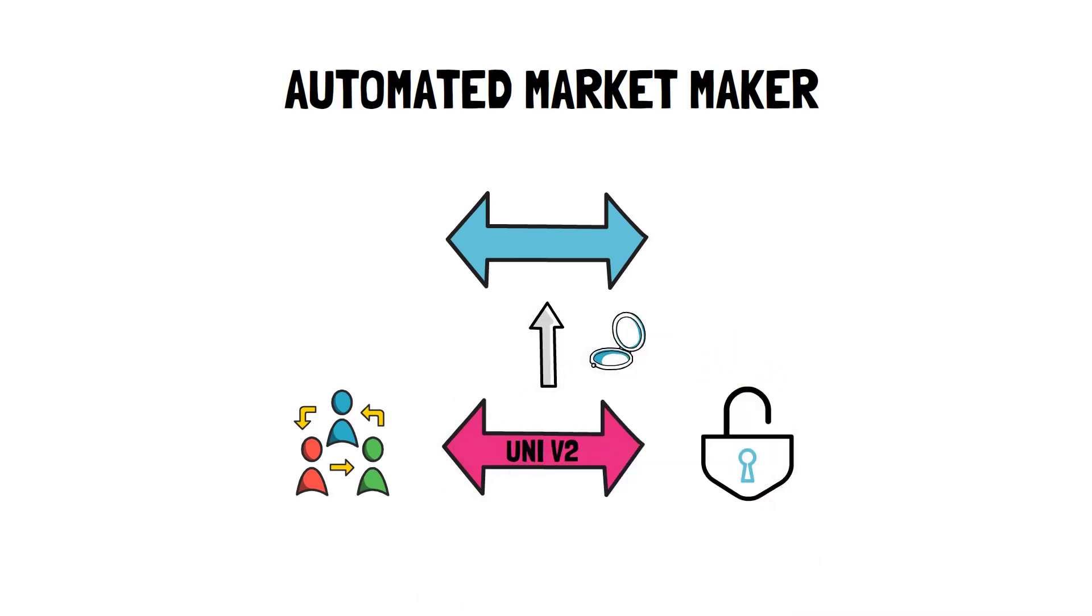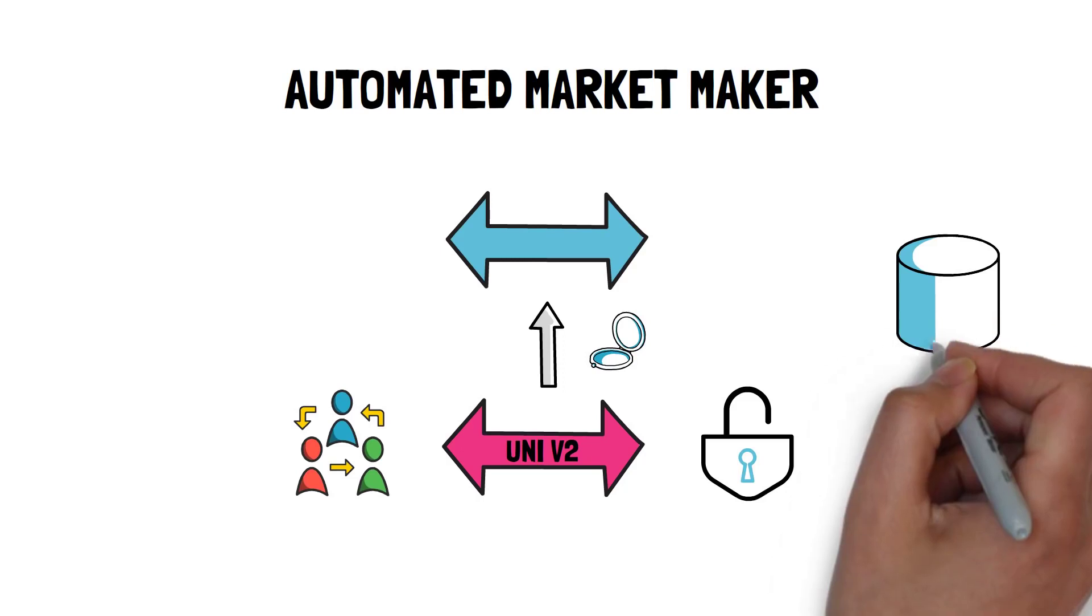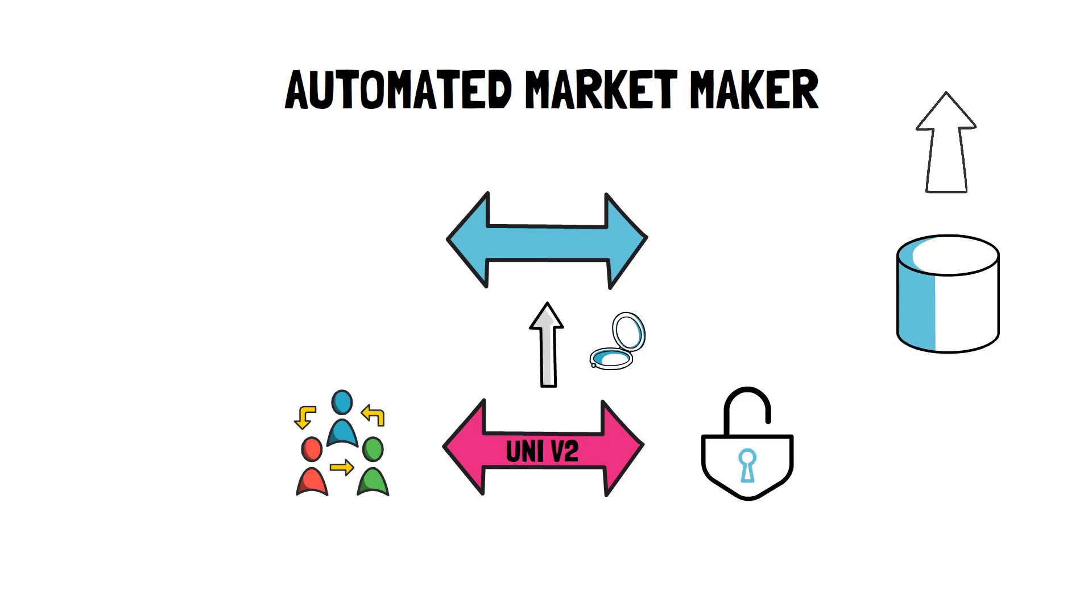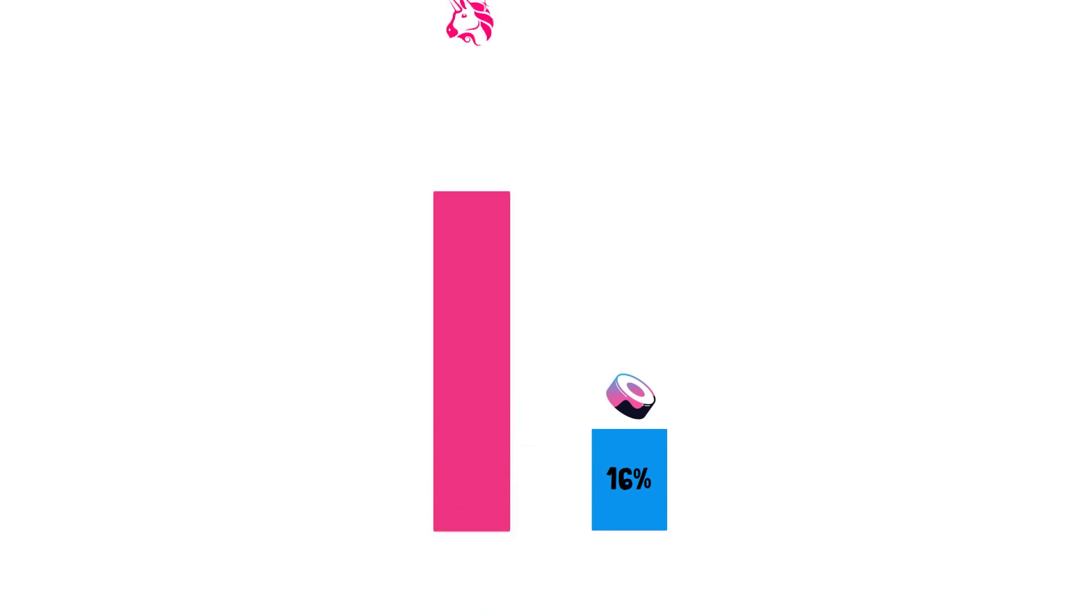If you need a recap on AMMs and liquidity pools, here's a popular video that I made some time ago. Currently, Sushi is the second largest AMM on Ethereum with around 16% of the market share. Uniswap remains an undisputed leader capturing around 54% of the total AMM market.